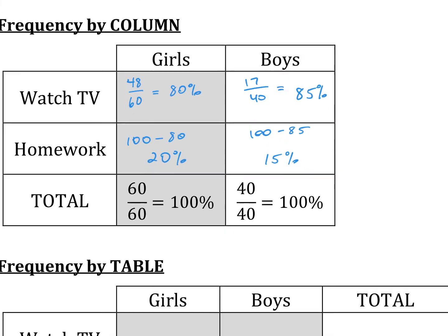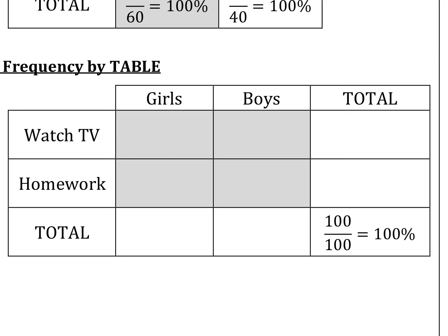For the by-table relative frequency, we use 100 as our denominator. Girls who watch TV: 48 out of 100 is 48%. Girls who do homework: 12 out of 100 is 12%. Boys who watch TV: 34 out of 100 is 34%. Boys who do homework: 6 out of 100 is 6%.